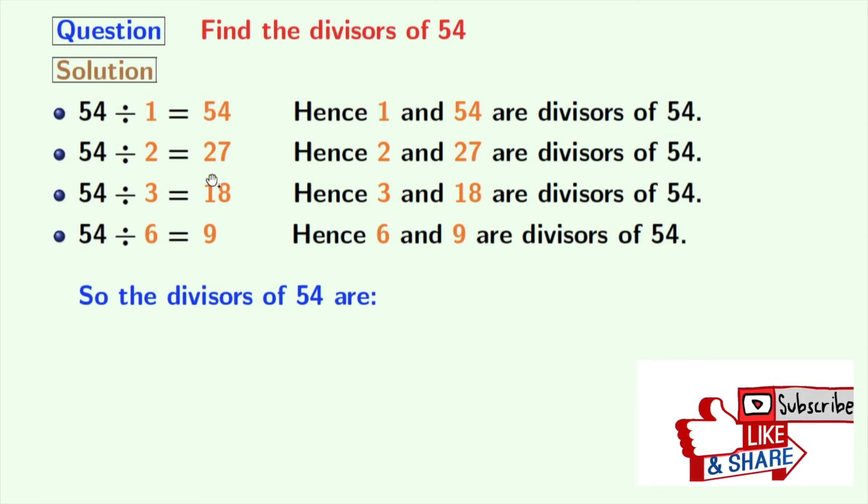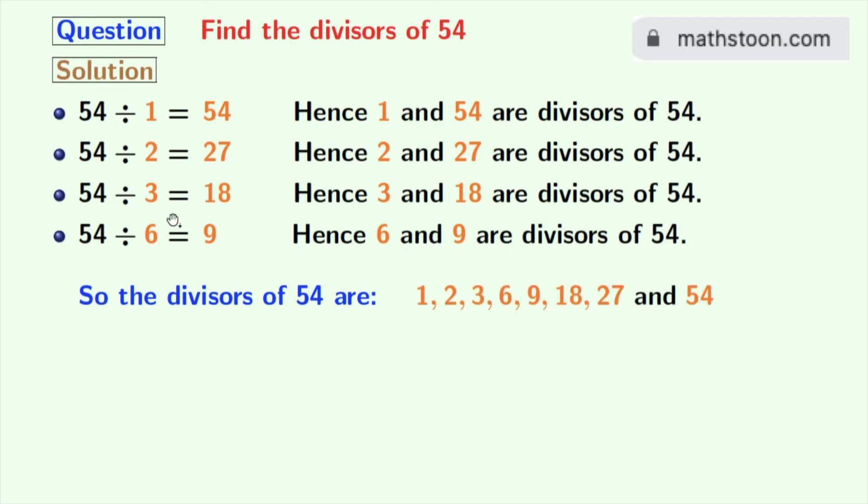Now look that we have all the divisors of 54 in orange colors. These numbers are 1, 2, 3, 6, 9, 18, 27, and 54. So the total number of divisors of 54 is 8.